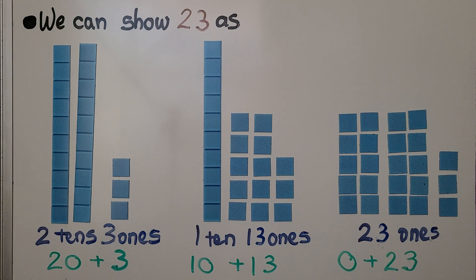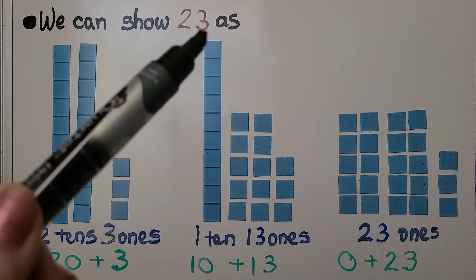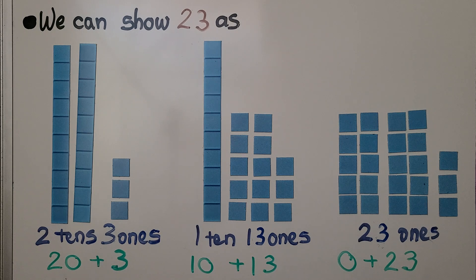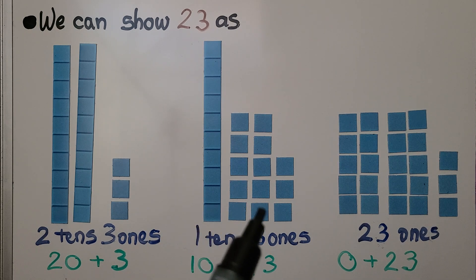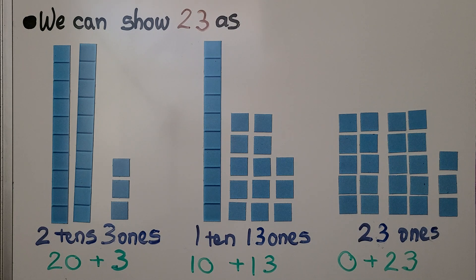We can show 23 as two tens and three ones — that's 20 plus 3. We can also show 23 as one 10 and 13 ones — that's 10 plus 13. Or we can show it as 23 ones, which is zero tens plus 23 ones. We can show it in different ways using different amounts of tens and ones.